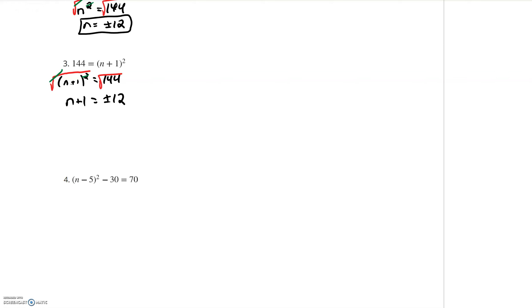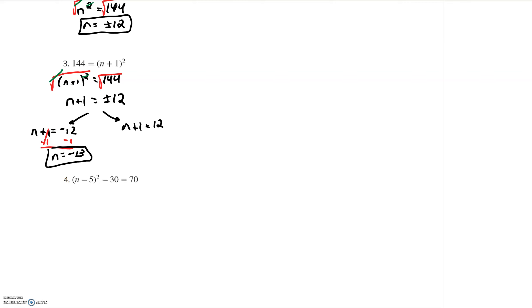Here's where we need to break it up because I have two answers. I have n plus 1 is equal to negative 12, and I also have n plus 1 equal to positive 12. Now I need to solve these two equations by getting n by itself. I subtract 1 from both sides, canceling the plus 1. On the left I get n by itself; negative 12 minus 1 is negative 13 — that's my first solution. For the second, I subtract 1 again: 12 minus 1 is 11. So I have two solutions: negative 13 and positive 11.